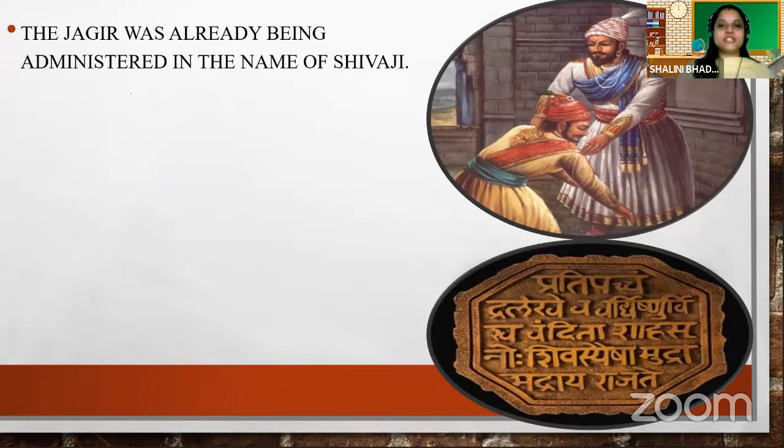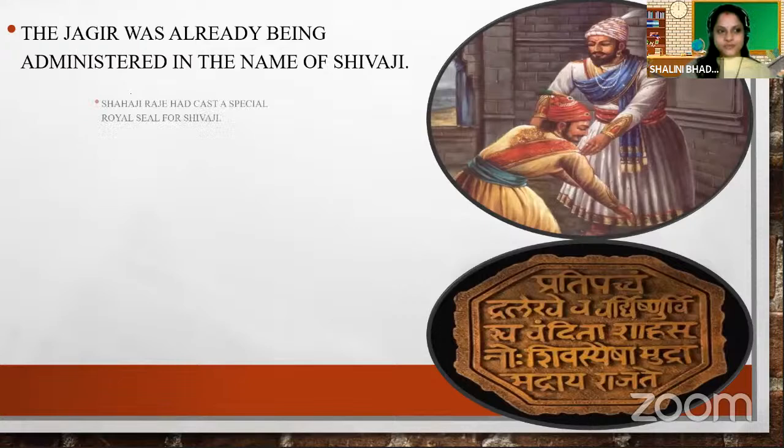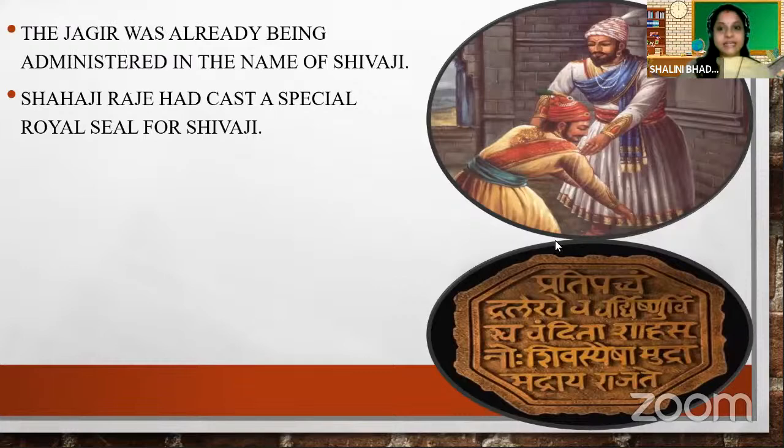In this picture, you can see Shivaji Maharaj taking blessings from Shahaji Maharaj. In another picture, there is a royal seal which we have seen in the previous lesson. The Jagir was already being administered in the name of Shivaji Maharaj. Shahaji Raje had cast a special royal seal for Shivaji, and here you can see that seal.